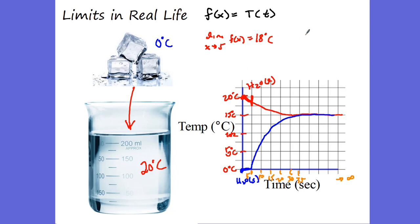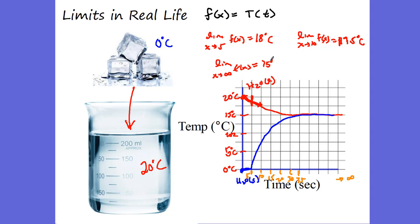As we're approaching 10 seconds, what's the limit as x, which is time, approaches 10 seconds? We're getting closer and closer to 17.5 degrees Celsius. As the limit of time, or x, approaches infinity — as it goes on forever — what is my temperature approaching? It's 15 degrees Celsius, because we are at equilibrium. We don't have an exact number for time equals infinity; infinity is not a number, it's a concept. As this water continues going on forever, we're approaching 15 degrees Celsius — that equilibrium temperature. That is a real-life example of limits.